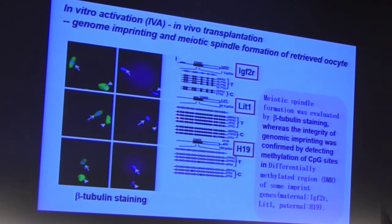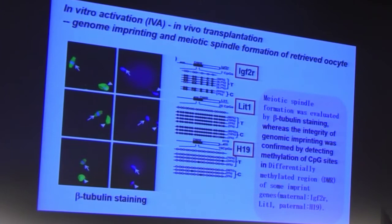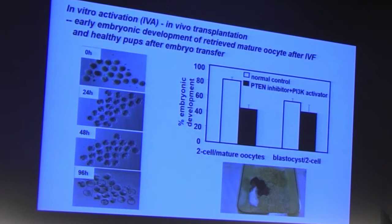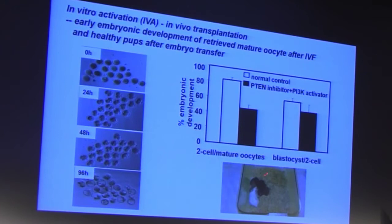All oocytes from drug-treated ovaries showed normal spindle formation. There was no difference in methylation of maternally imprinted IGF2R and LIT1, and paternally imprinted H19, between drug-treated and control groups. We then performed IVF to further confirm oocyte normality after IVA. The oocytes fertilized and developed to the blastocyst stage, and after embryo transfer we obtained completely healthy pups. The Speeding group also repeated our studies and confirmed the healthiness of the pups in more detail.